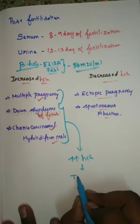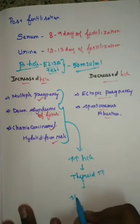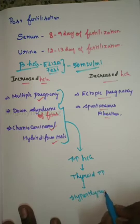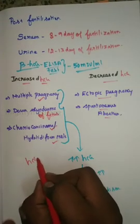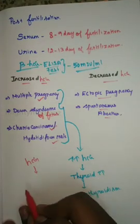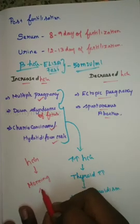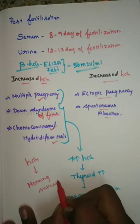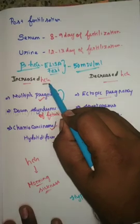As HCG acts as a thyrotropic hormone, it produces more thyroid hormone and causes symptoms of hyperthyroidism. HCG is also one of the reasons for morning sickness — vomiting — in the first trimester. In conditions of increased HCG, there will be more chances for hyperemesis gravidarum.